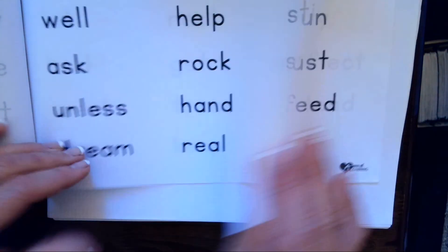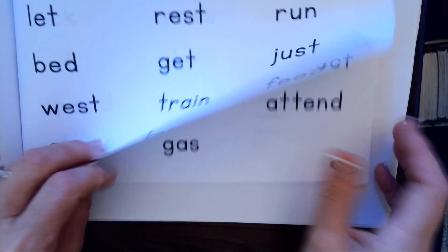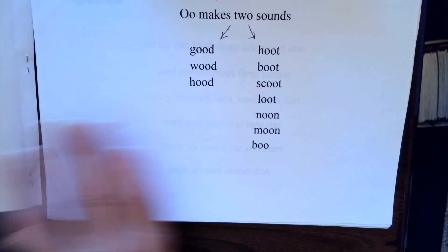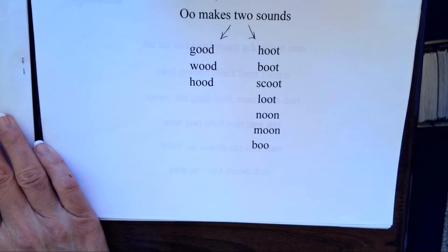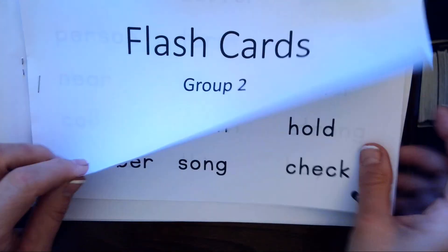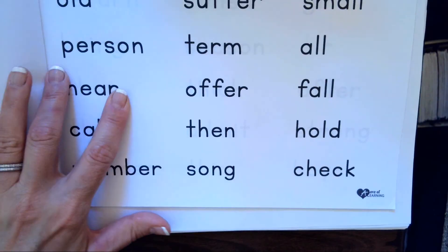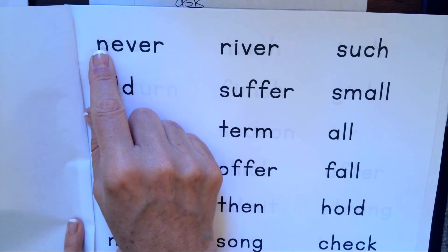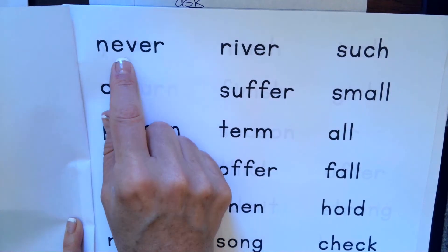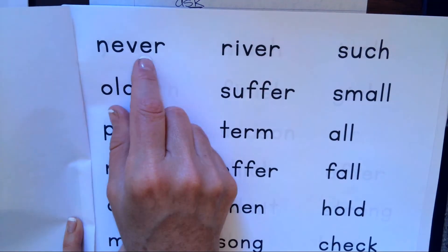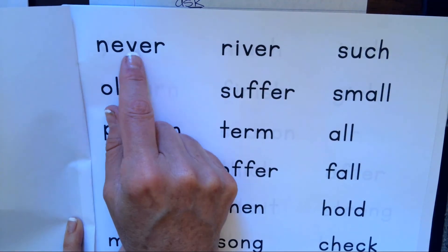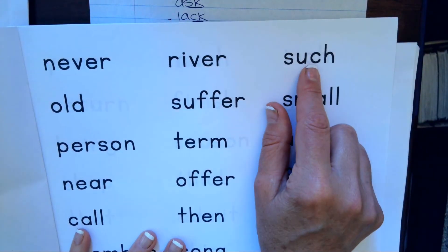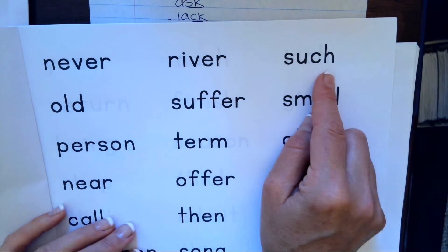I think we've already done all of these blends. Now we're going to go to the next set, which has different blends in it. Like this one is E-R. I know that this word is never, but I'm actually going to read my way: E-R makes er, N-E-V-E-R, never. C-H makes ch, S-U-C-H, such.